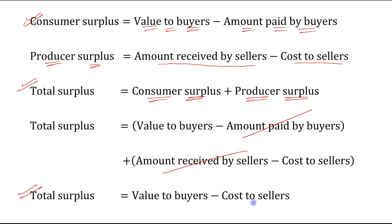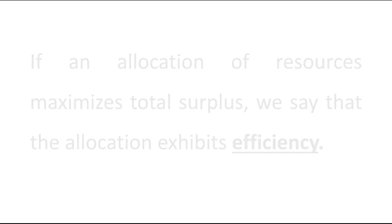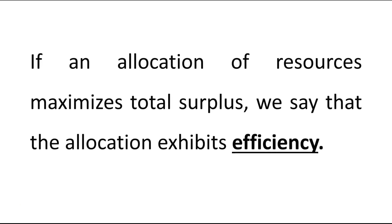We are left with total surplus equal to value to buyers minus cost to sellers. This is total surplus: value to buyers minus cost to sellers. If an allocation of resources maximizes total surplus, we say that the allocation exhibits efficiency.